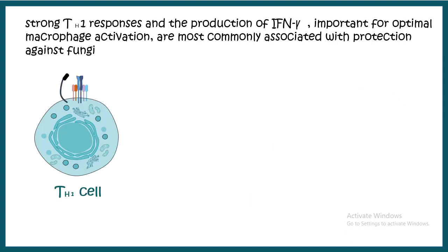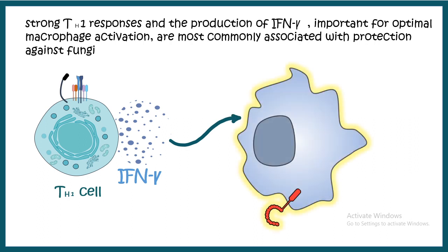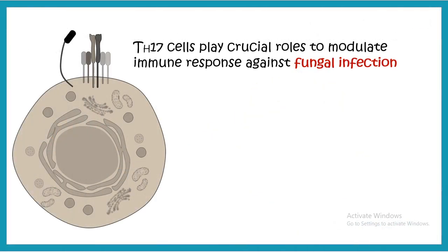The Th1 subpopulation of T helper cells is really important for fungal immunity. Th1 cells secrete interferon-gamma, which activates macrophages and creates inflammation, leading to increased macrophage recruitment and engulfment of the fungus, thereby clearing it from the system.